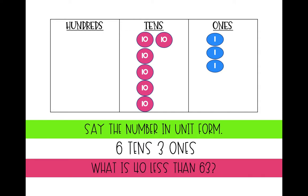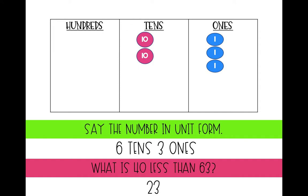Let's see if we can figure out what is 40 less than 63. How do you think we can figure out what 40 less than 63 is? We can take away four tens from our place value chart. Let's do that now — one, two, three, four. We took away 40 from 63. What number are we left with? Very good — we're left with 23.